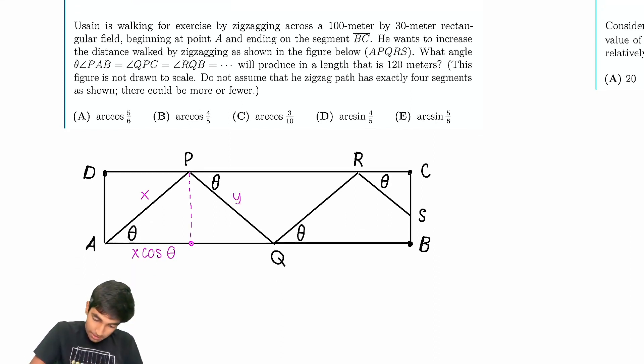So now let's say this is y meters. Now, because this is theta, this is also going to be theta by alternate interior angles. So this is y cosine theta meters.